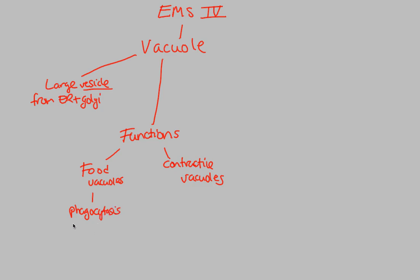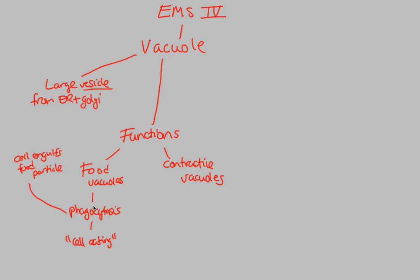Phagocytosis is a great word to break down. The prefix 'phago' literally means to eat, 'cyto' refers to a cell, and '-sis' means a process — so this literally means 'cell eating.' This is how a cell eats: phagocytosis occurs when a cell engulfs a food particle, and that food particle will then be put into a food vacuole.